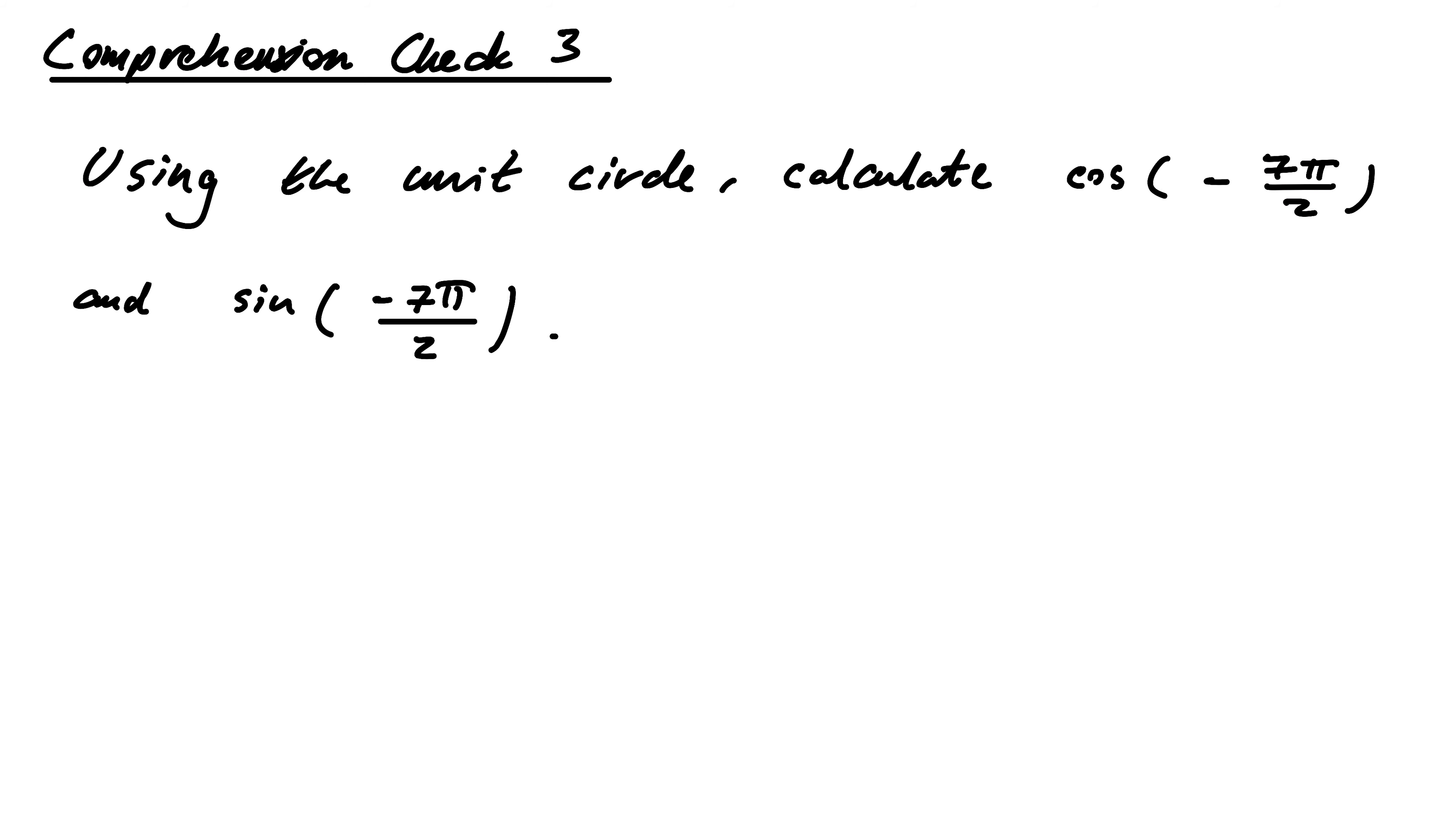Using the unit circle, calculate cos of minus 7π over 2 and sine of minus 7π over 2.